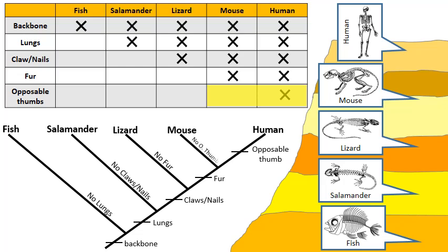The mouse branch has no opposable thumbs. In this cladogram that I've now drawn, I can start to analyze and see relationships and similarities. One thing I also want to point out: cladograms can be viewed as a timeline — starting at the bottom is longer ago, and near the top is present day. This matches the rock layers on the right-hand side of the screen. I can see that the fish are at the bottom of the rock layers, which is why they were the first to branch away. Because the fish are the oldest of the organisms, they were the first ones to branch away.